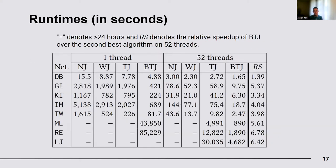This table shows the runtimes of our algorithms on a single thread and 52 threads. We also give the relative speedup of our best algorithm, BatchTripletJoin, over the second-best algorithm at 52 threads. We see that BatchTripletJoin is consistently several times faster than all of our other algorithms. On the largest network with 112 million edges, LiveJournal, BatchTripletJoin is able to finish the computation in 78 minutes by using 52 threads.